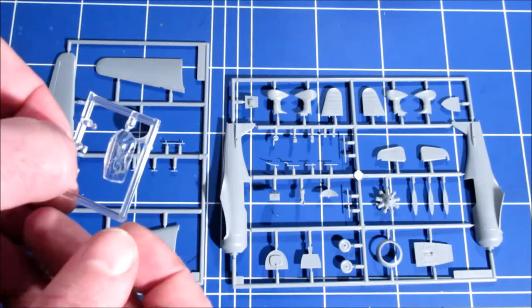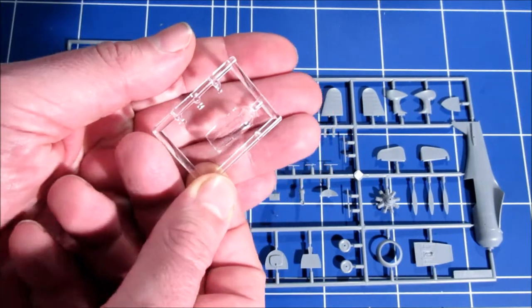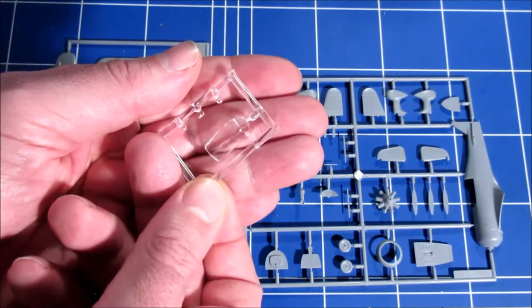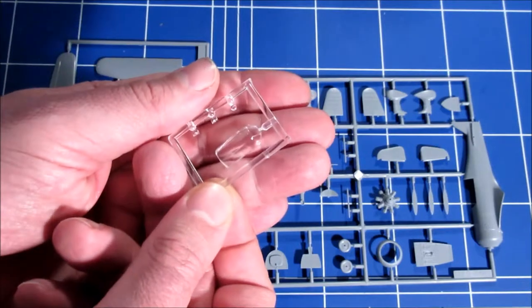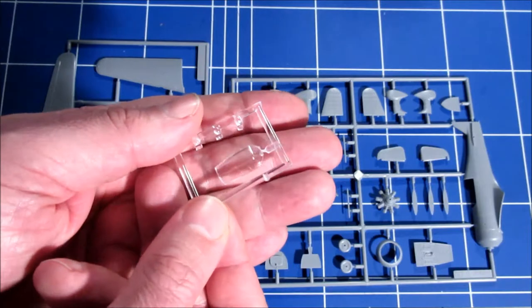And let's go through the sprues. Well, first we have here the smallest sprue, the transparency. Very nice, very clear.